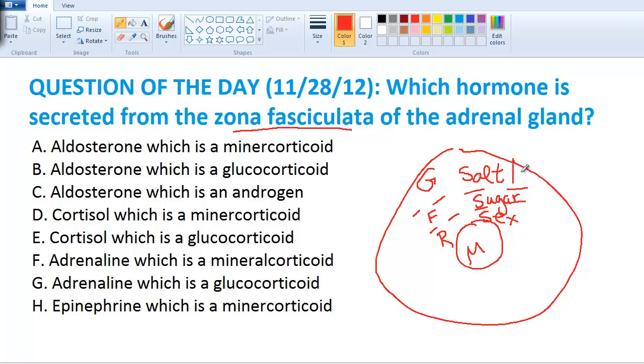What's the salt? That's sodium. The sugar is glucose, so glucocorticoid. That's cortisol. Jump around here and fill it out. This is aldosterone. This is your androgen. We want the zona fasciculata, that's F. We're looking for glucocorticoid, cortisol.